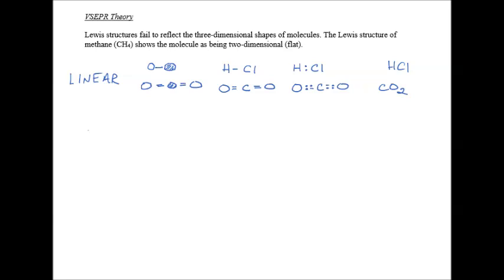The second Lewis structure is bent. Like it implies, a bent molecule has an angle to it.